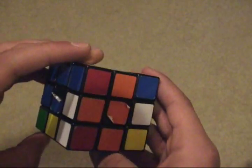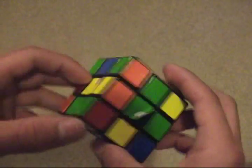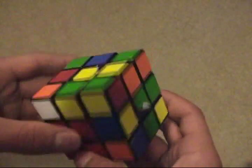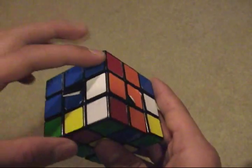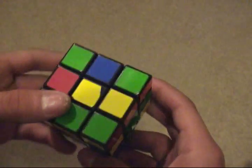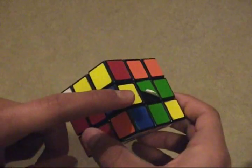Now for the 2x2x3 block, I'm going to use this corner and these two edges. I'm going to first pair the corner with one of these edges, whichever is easiest. That happens to be this one.